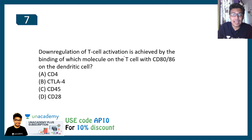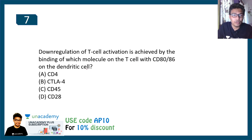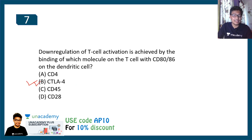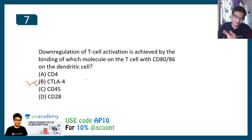Question seven: down-regulation of T cell activation is achieved by binding of which molecule to the T cell receptor — CD8, CD86, or others? The correct option is CTLA. Molecules like CTLA and BTLA prevent T cell activation — they act like a brake. For the detailed concept, check the I button.